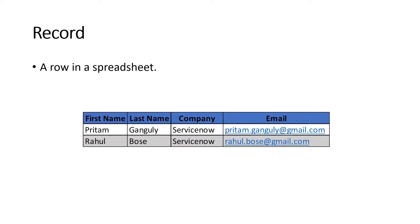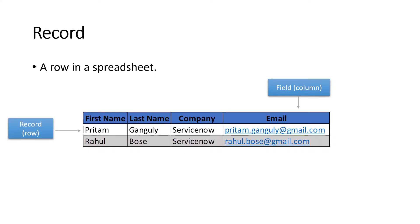First, let's talk about record. A record, in simple terms, is a row in a spreadsheet — like what you've seen in Excel. In a spreadsheet you have columns — like first name, last name, company, email — and you have rows. So here, 'Preetham Ganguli, ServiceNow, [email]' is a single record containing many fields. Another row, 'Rahul Bose, ServiceNow, rahul.boss@gmail.com,' is another record. A record is a row in a spreadsheet.